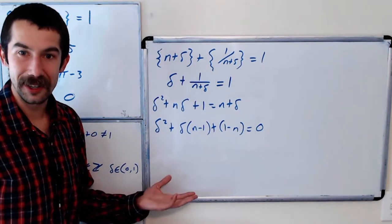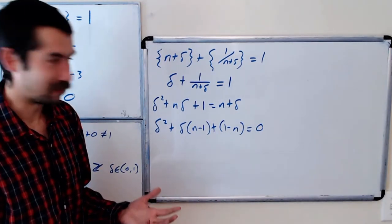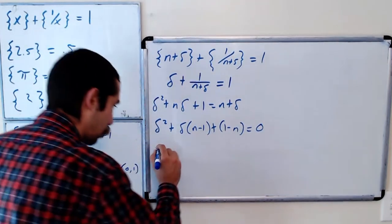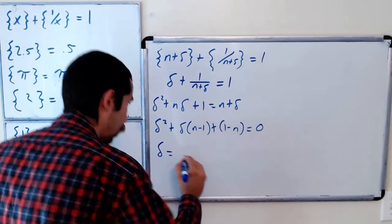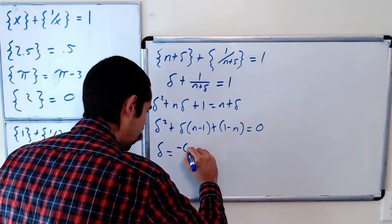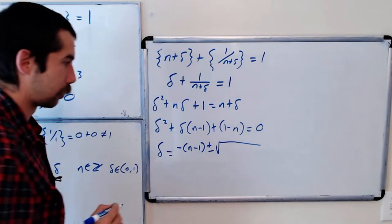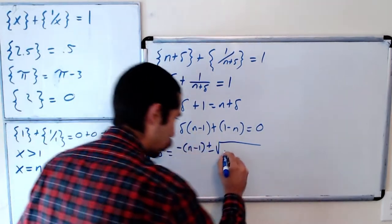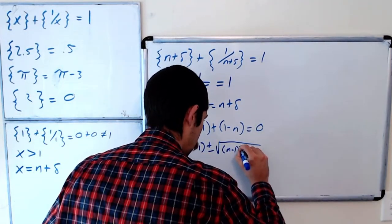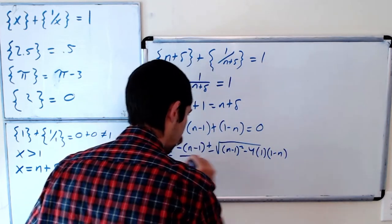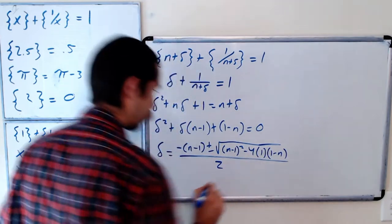Right and we know how to solve this. I know there's a lot of interesting letters going on but this is just a quadratic. So we have delta is equal to negative n minus 1 plus or minus the square root of n minus 1 squared minus 4 times 1 times 1 minus n all over 2.